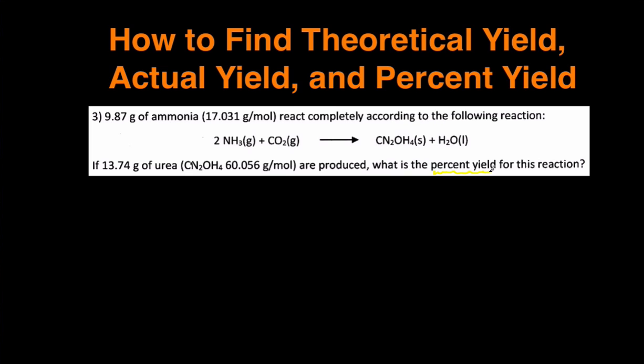We're trying to figure out the percent yield, so let's start by writing out the equation for percent yield. Percent yield equals the actual yield divided by the theoretical yield times 100%. The actual yield is how much product was actually produced from your experiment.